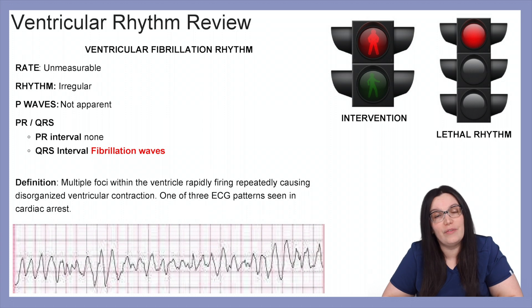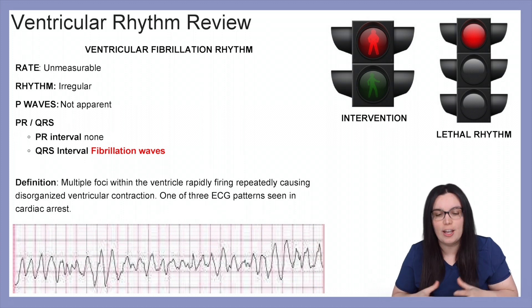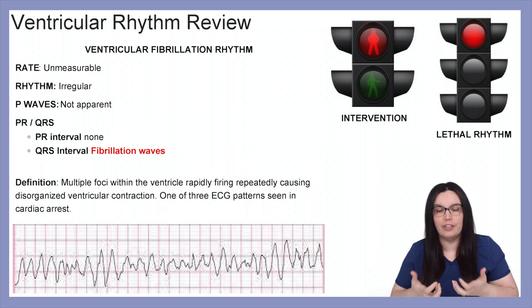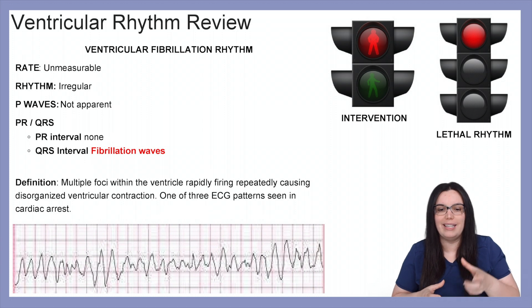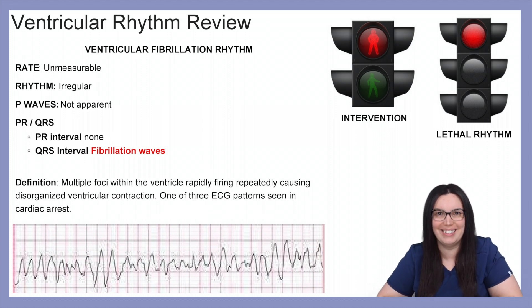The definition of ventricular fibrillation is multiple foci within the ventricles rapidly firing repeatedly, causing disorganized ventricular contraction. This is one of those three ECG patterns that we see in cardiac arrest.